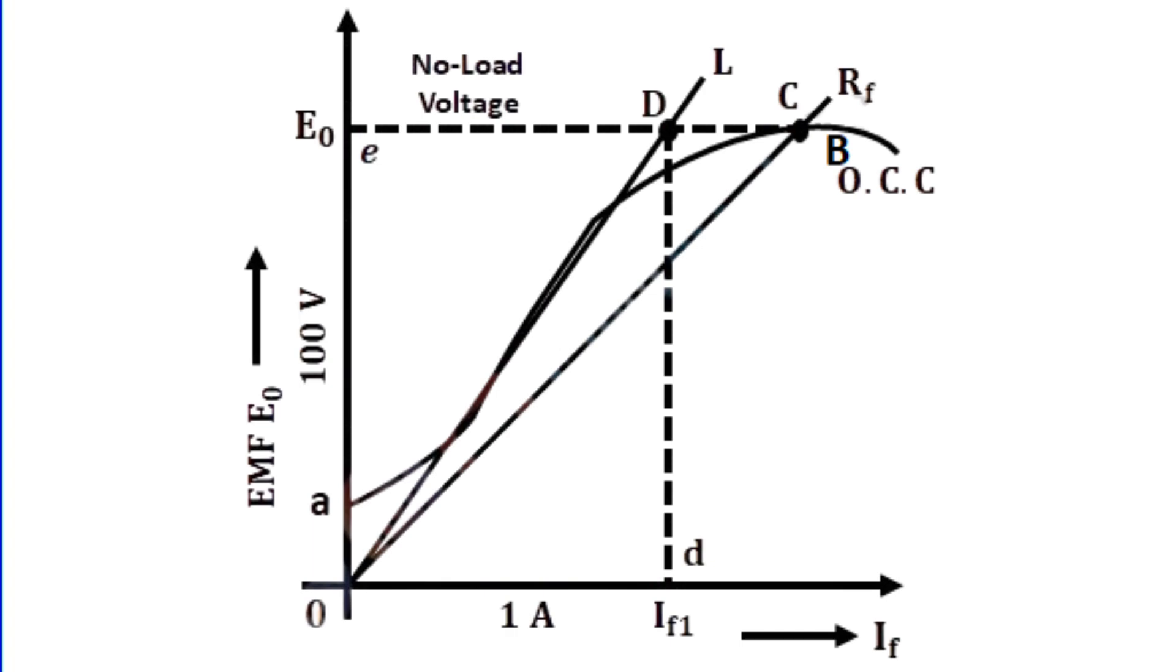The OCC curve starts from point A instead of origin O because of the presence of residual magnetism in the generator poles, which generates small EMF E1 when the DC shunt generator runs at rated speed.